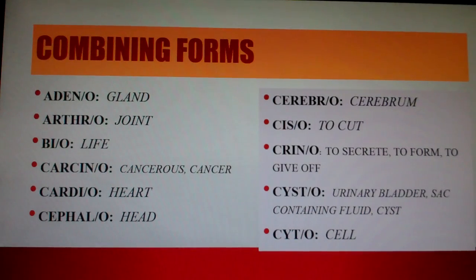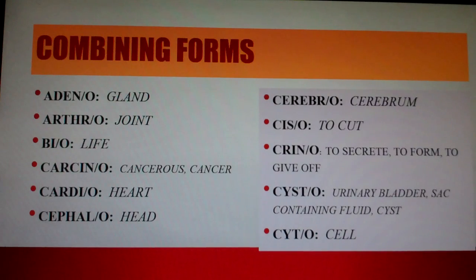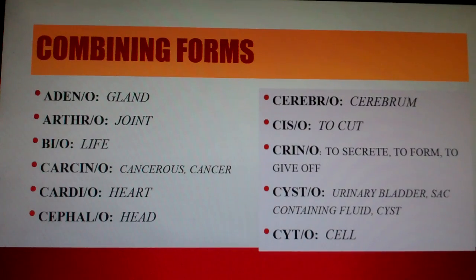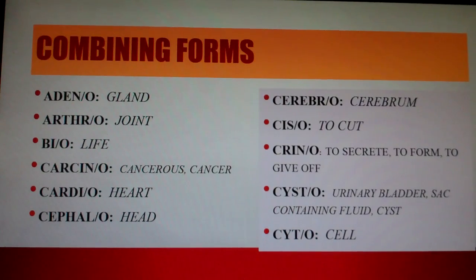Common combining forms: Adeno means gland. Arthro means joint. Bio means life. Carcino means cancerous or cancer. Cardio means heart. Cephalo means head. Cerebro means cerebrum. Sciso means to cut. Crino means to secrete, to form, or to give off. Cysto means urinary bladder, sac containing fluid, or cyst. Cyto means cell.